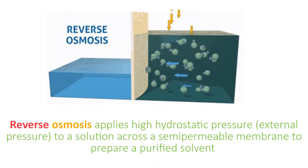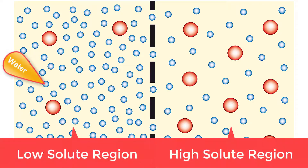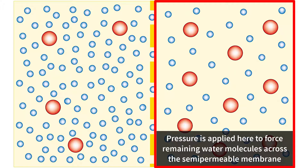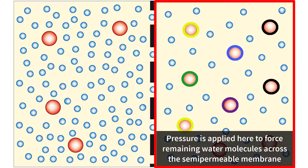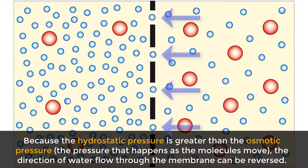Water is forced from an area of high solute concentration to that of lower concentration. Reverse osmosis applies high hydrostatic pressure, or external pressure, to a solution across a semi-permeable membrane to prepare a purified solvent. The membrane allows the passage of water, but not ions — for example, sodium, calcium, and chlorine ions cannot pass, nor larger molecules such as glucose, urea, and bacteria. Because the applied hydrostatic pressure is greater than the osmotic pressure, water moves in the opposite direction of where it would flow naturally.